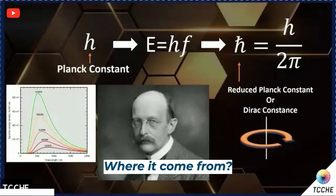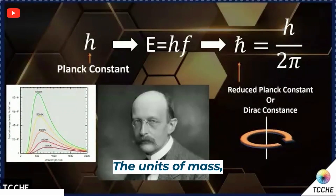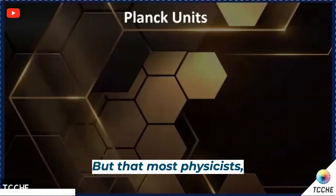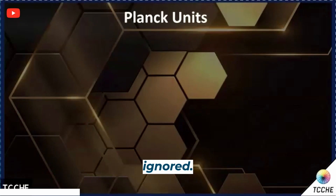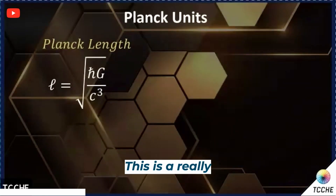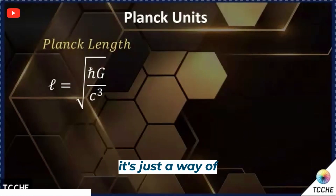Which energy? Where does it come from? Well, when Planck did this, he started playing around — it's called dimensional analysis. It's like how you deal with units: units of mass, length, temperature, time. He started playing with the equation and realized he could make something kind of miraculous that most physicists in 100 years basically ignored. It's called the Planck units.